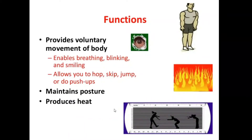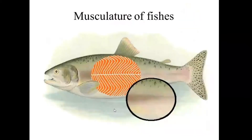What are the functions of the Musculoskeletal System in Vertebrates? They basically provide voluntary movement of the body, enable breathing, blinking, and smiling. All types of movement — jaw movement, movement of hands and arms, locomotion from place to place — involve muscular contraction. They allow you to hop, skip, jump, or do push-ups, and also maintain posture and produce heat.